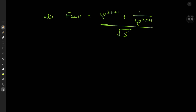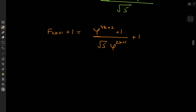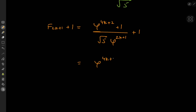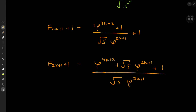By now you have an idea of the approach: we're going to tackle this infinite series head on. We need the reciprocal of F_{2k+1} + 1. Writing this out, F_{2k+1} + 1 equals (phi^{4k+2} + √5 · phi^{2k+1} + 1) divided by (√5 · phi^{2k+1}).